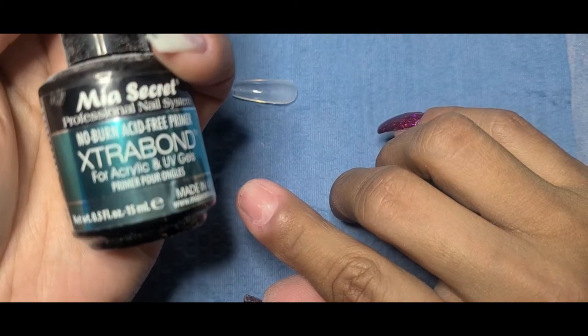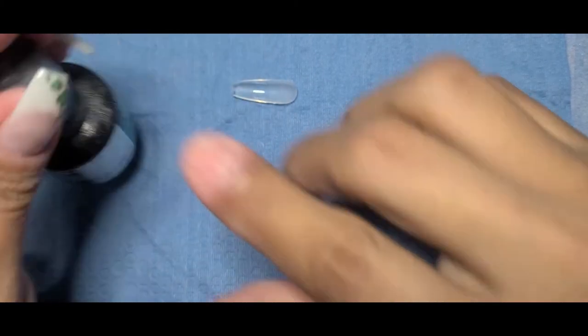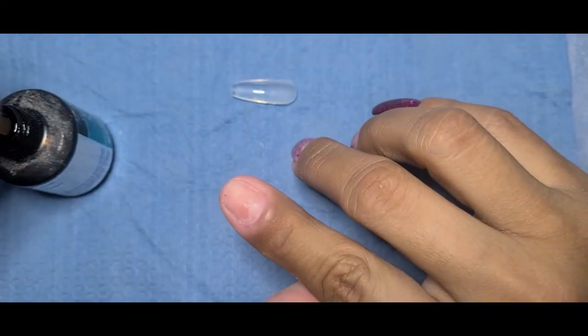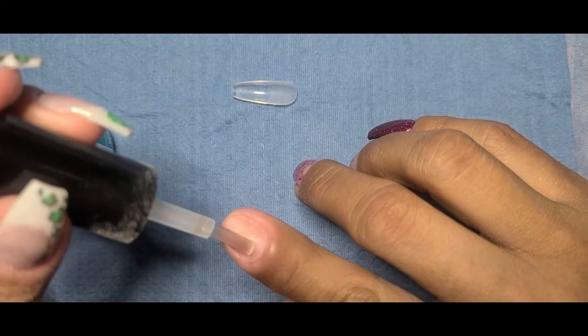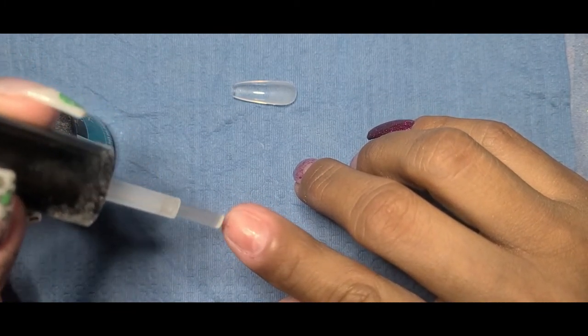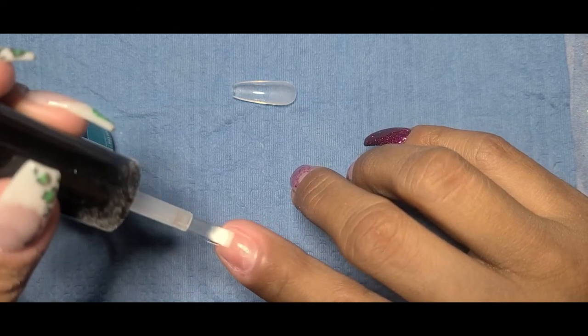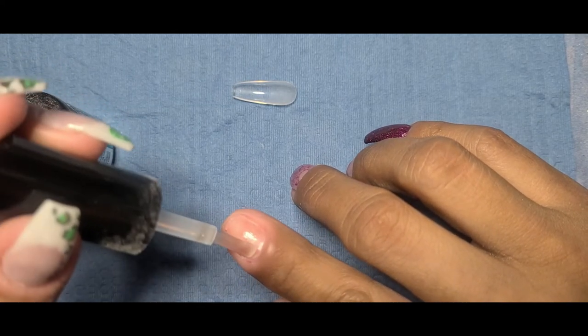This is my Mia Secret Extra Bond. I get this at my local nail supply store. And this, you want to really focus on just the nail bed. You want to avoid getting this on your skin, just because over time, excess use and contact with your skin can develop allergies.